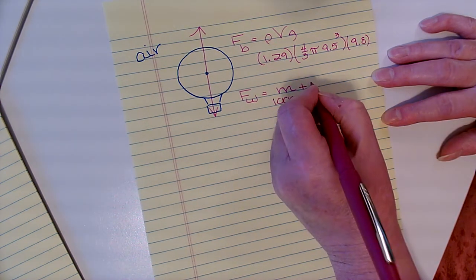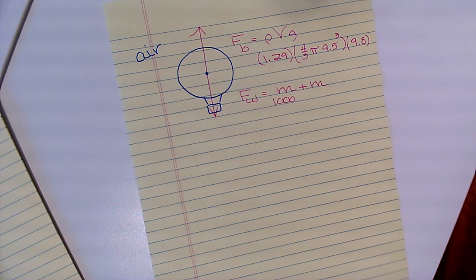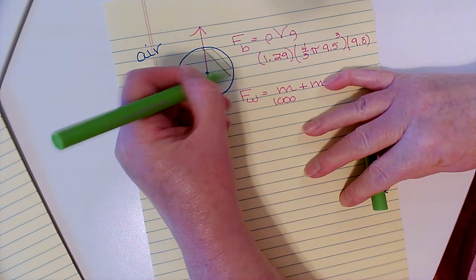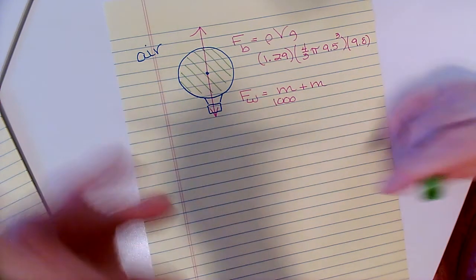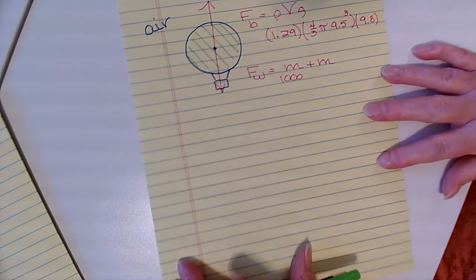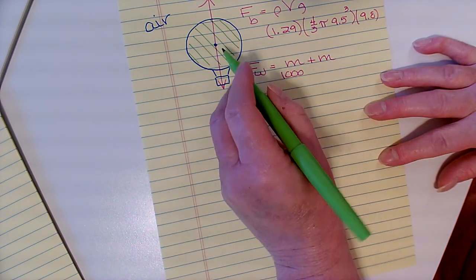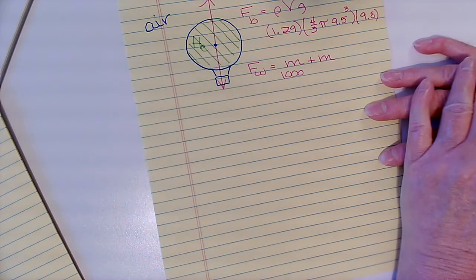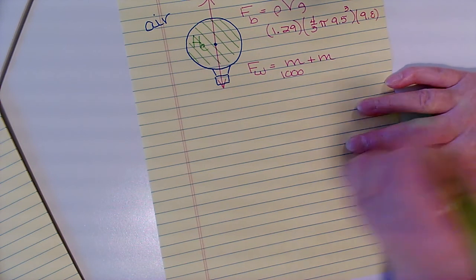But it's also made up of the mass of the helium that is inside the balloon. We don't usually think that helium has a lot of mass, but this is a pretty big balloon. Because it's a big balloon, even a gas has mass. So we have to go off to the side and figure out what the mass of the helium is. We're going to use the density equation to find the mass of helium.